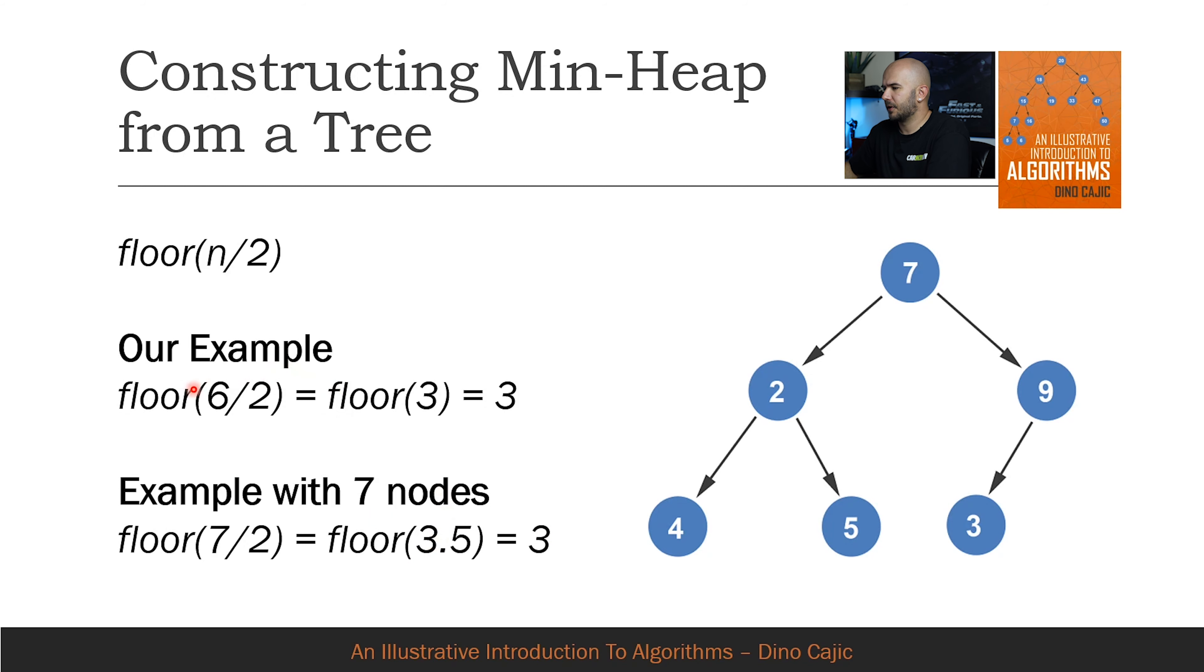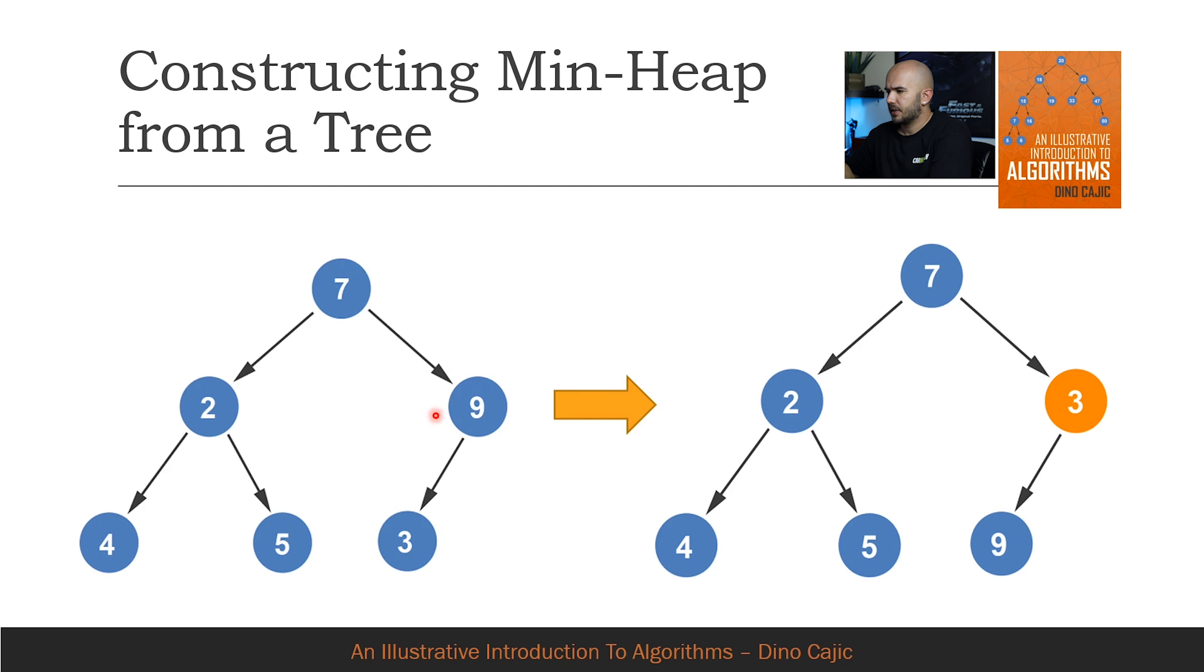For our example, there are six nodes, so the floor of 6 over 2 equals 3. The starting position will be at the third node. We'll check to see if there's a child node that has a smaller value than 9. Since there is, the two nodes are swapped.